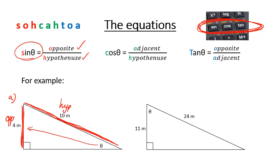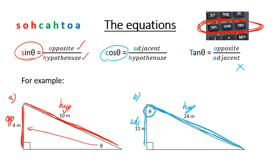In our second example, call it B, we've again got a value for our hypotenuse, so we know straight away it's not tan. Here we've actually got the adjacent — so we've got our hypotenuse and our adjacent, because theta is right here. We can see that cosine has the adjacent and the hypotenuse, so therefore we're going to use that formula.